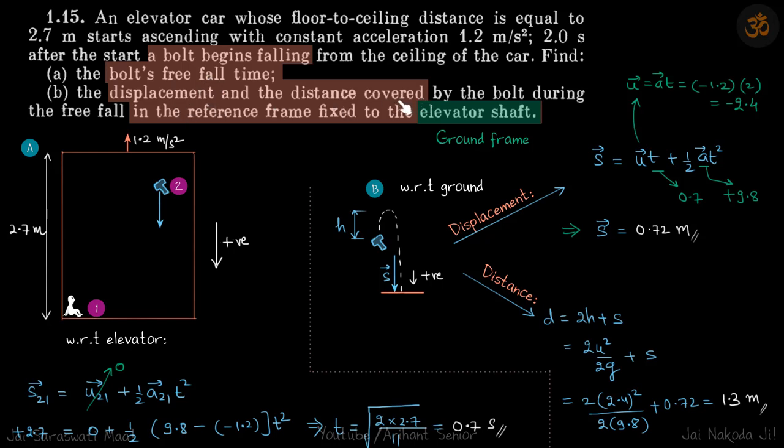Now in the second part, with respect to ground, we need to find the displacement and distance covered by the bolt. When the bolt falls, to this person it looks like it's falling down, but in reality it has some upward velocity. So with respect to ground it will go up and fall down, and here it will touch the elevator again. Let's say this is the maximum height it reaches from where it drops, and it goes down. That is our displacement with respect to ground. So it falls down here with respect to the elevator, but in reality it goes up and comes down and hits the elevator again.